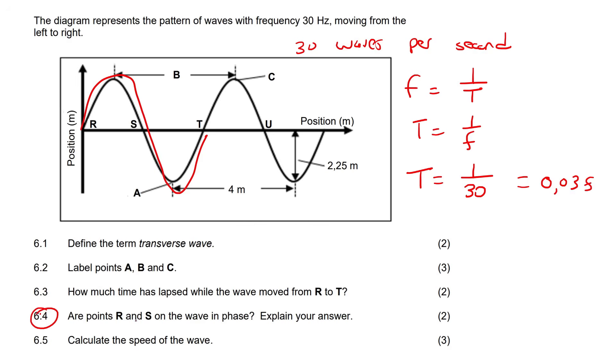This question says: are the points R and S on the wave in phase? No, they're not. But let me explain. If you look carefully, R - if you look at the line going to the right of point R, it's going up. If you look at the line to the right of point S, it's going down. So they're not in the same kind of position. But if you had to look at R and T - with R, the line's about to go up. And if you look at T on the right, it's about to go up. So you can see that these two are in the same phase.